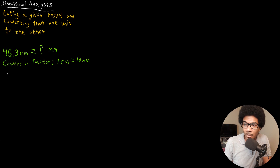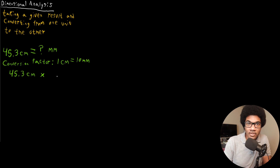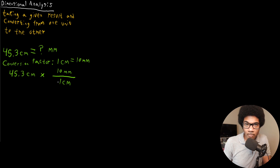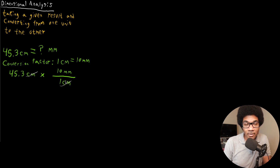We have 45.3 centimeters, and we multiply by our conversion factor in such a way that the original units cancel out and the new units are left over. We set it up as 10 millimeters over one centimeter — treating units like algebraic variables, the centimeters cancel out. So we just multiply 45.3 by 10, giving us 453 millimeters as a result.